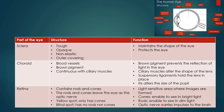A past paper question asked: what enables nocturnal animals to see better at night? Nocturnal animals are awake at night and sleep during the day. The answer is they have more rods. If they have more rods, it means they can see better in dim light, which is what nighttime provides. They can ask questions like that.